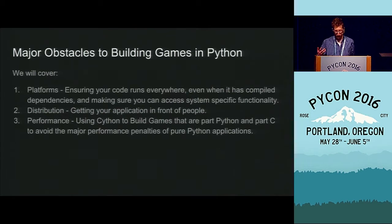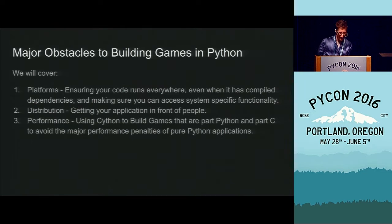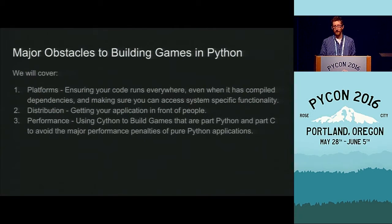The second part is distribution, which is somewhat different from just getting your code to run on an operating system. It's about getting your code to run on random people's computers who have done who knows what to them. You've got to be distributing compiled binaries for the specific platform — there's no other way to do this. Most users, especially for games, want to install an app, click go, and play. They don't want to bother about package management.